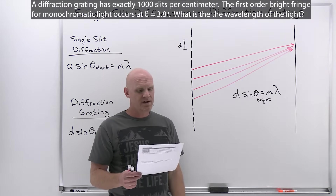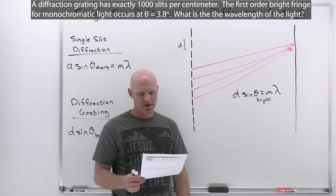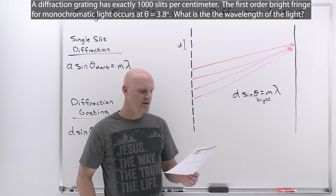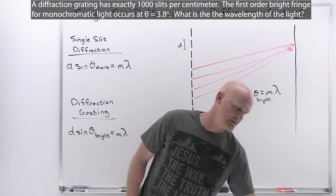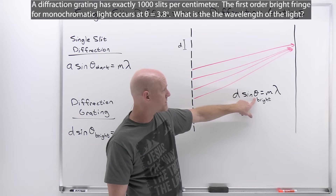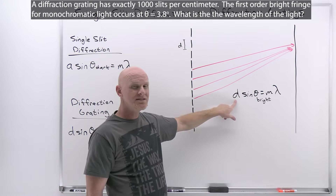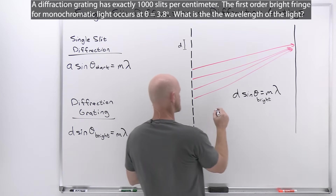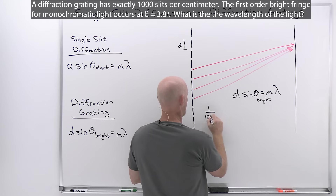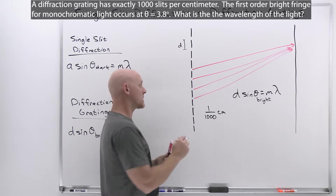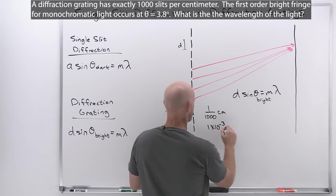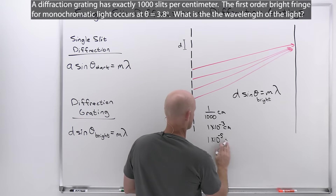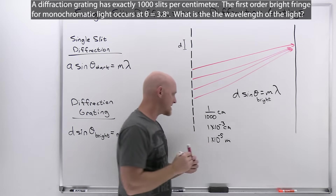The question says: a diffraction grating has exactly 1,000 slits per centimeter. The first-order bright fringe for monochromatic light occurs at theta equals 3.8 degrees. What is the wavelength of light? We're given the angle theta for the first-order bright fringe. We weren't given d directly, but 1,000 slits per centimeter means the distance between adjacent slits is 1/1000th of a centimeter — 1 times 10 to the negative 3 centimeters, or 1 times 10 to the negative 5 meters.